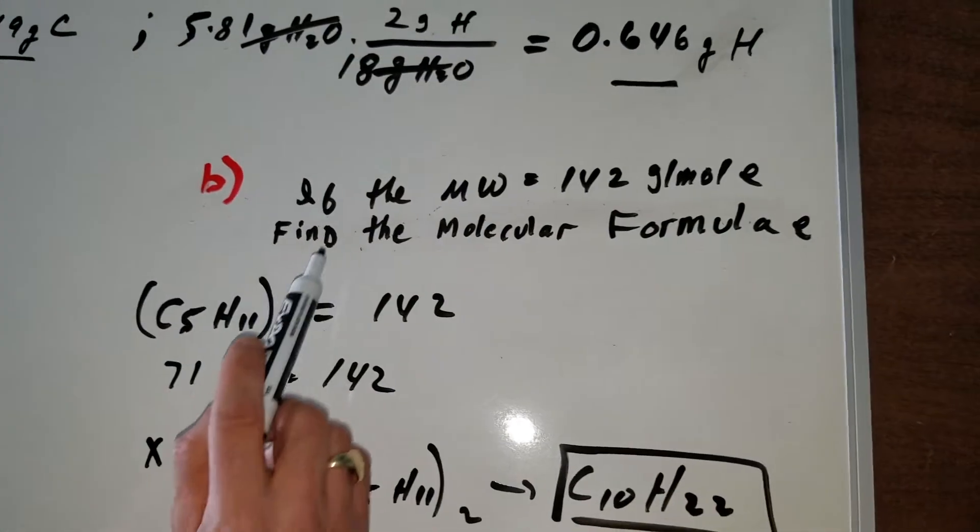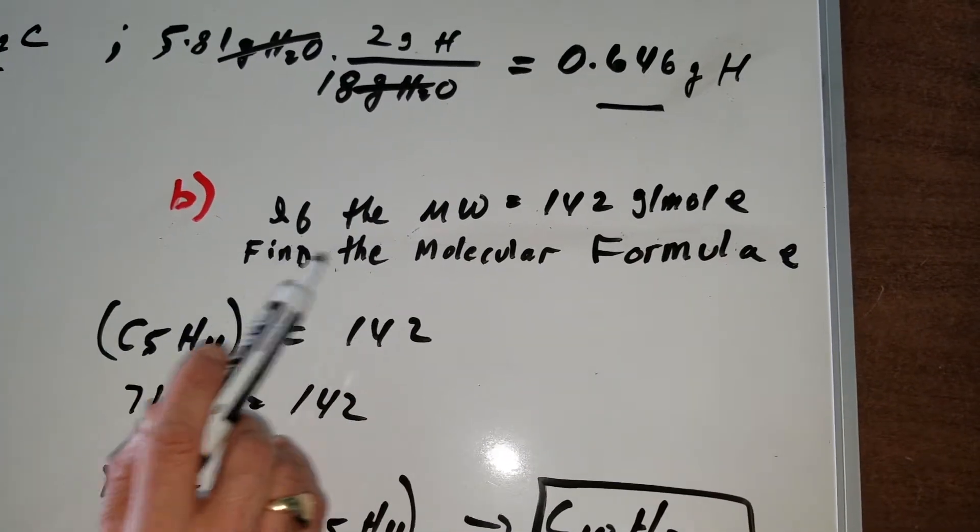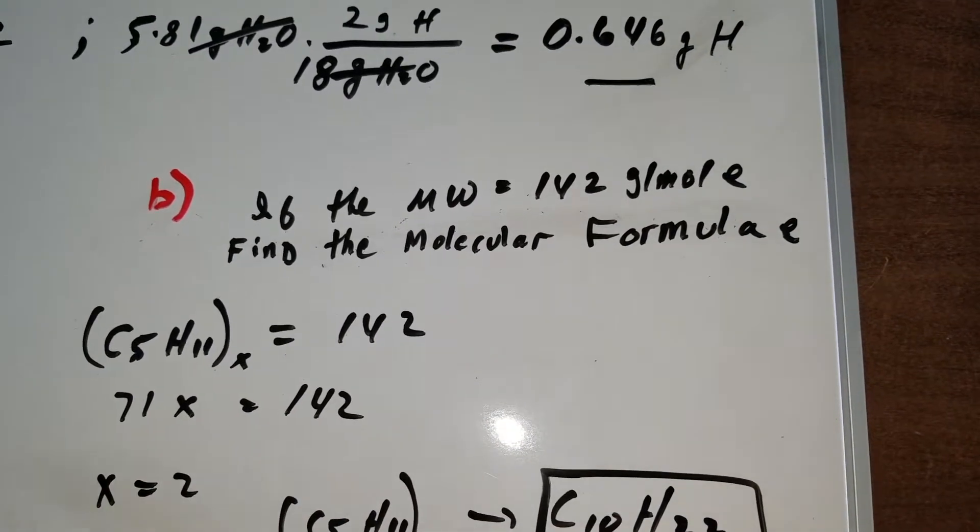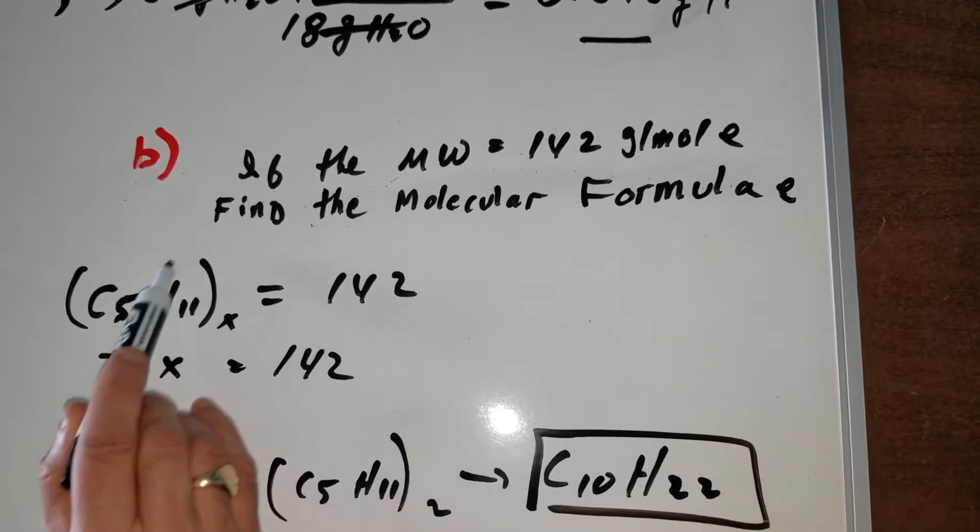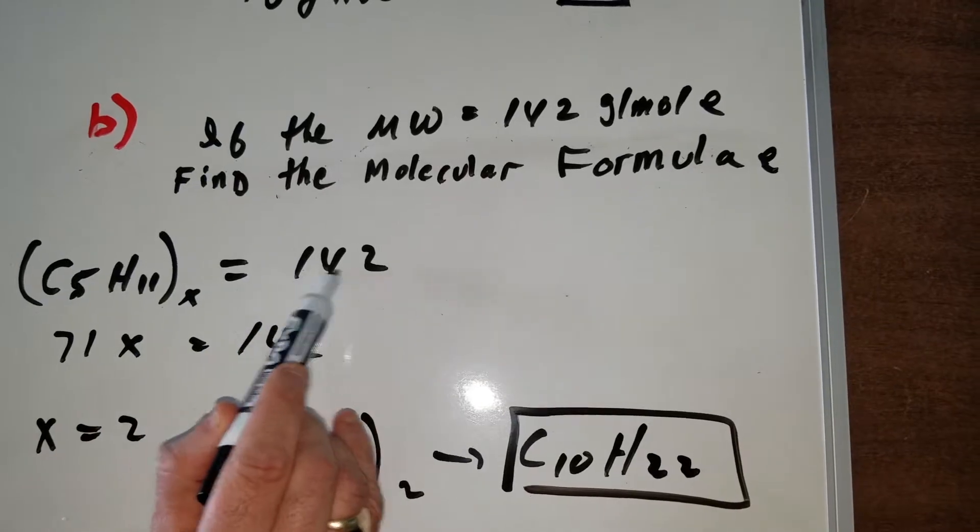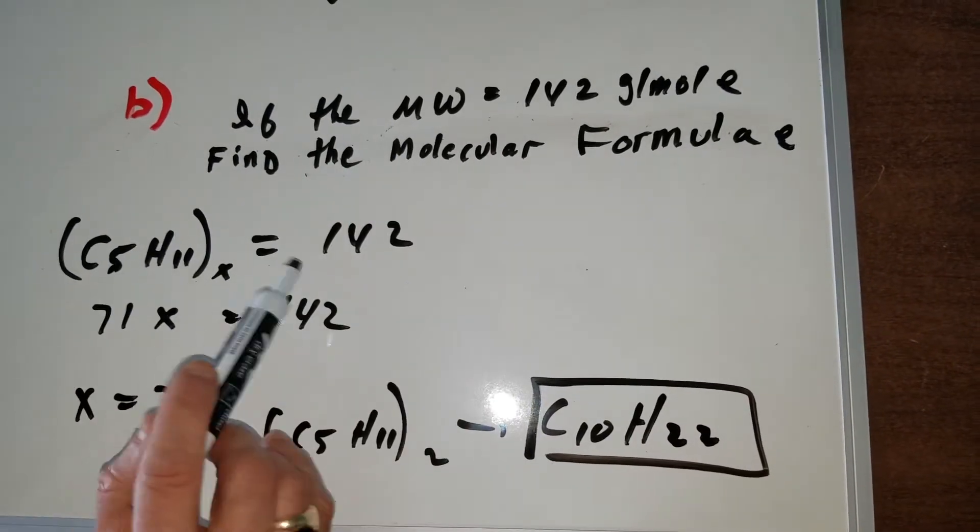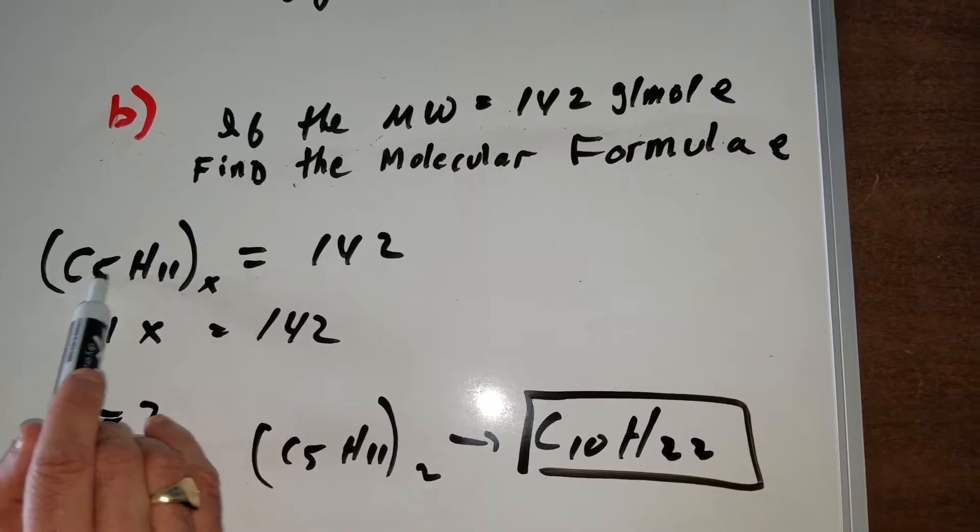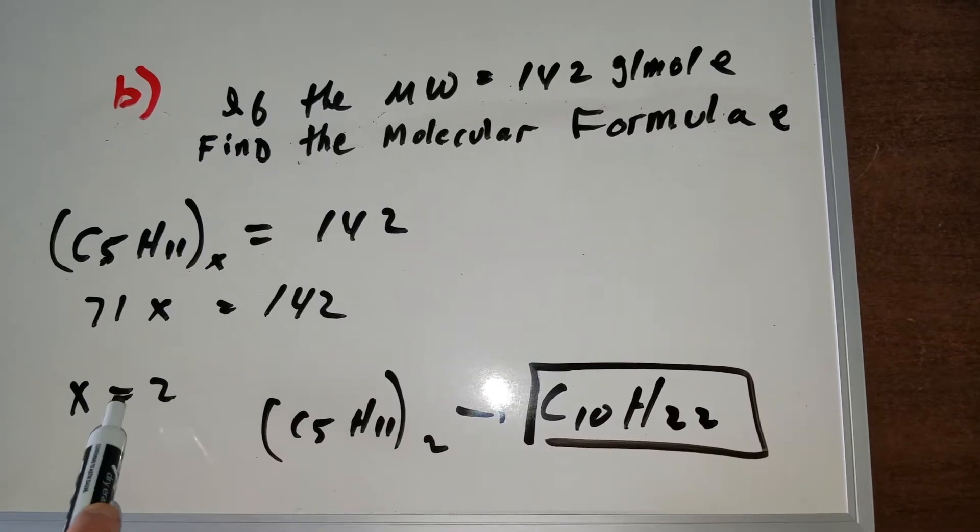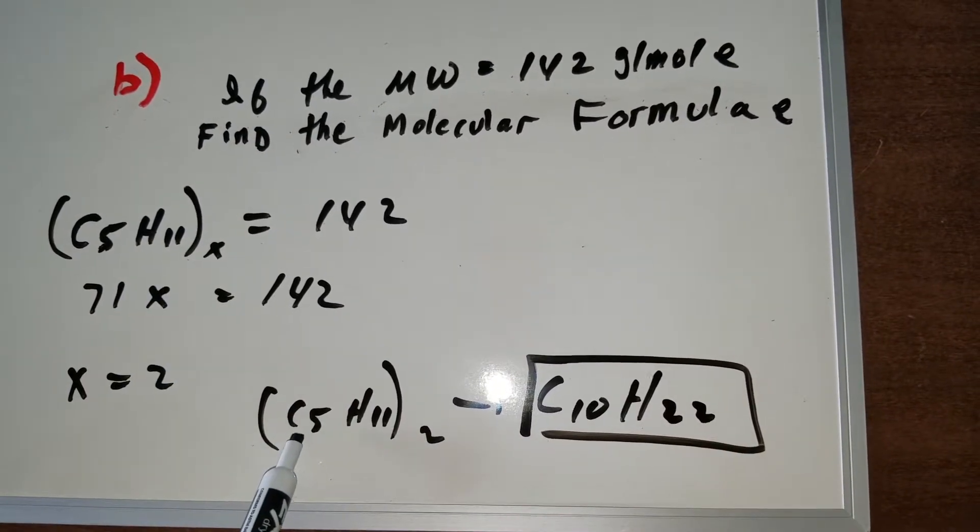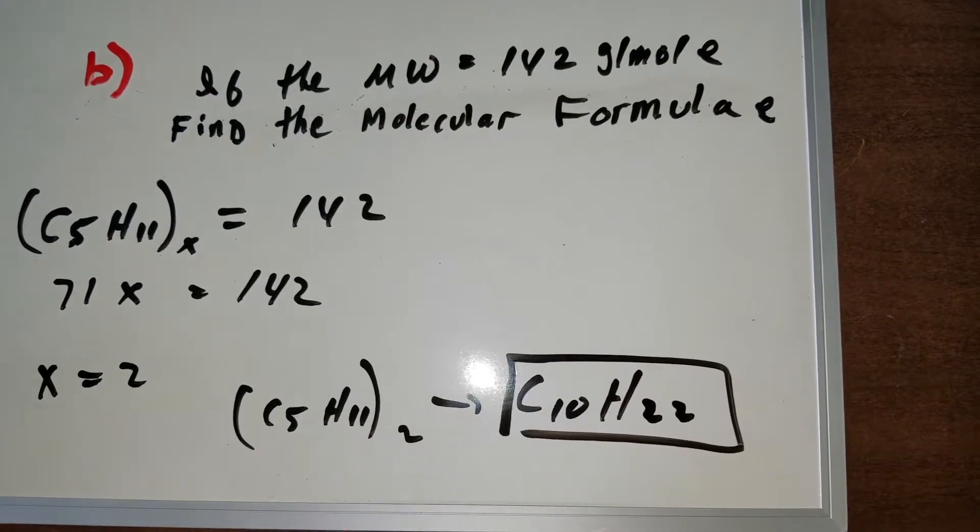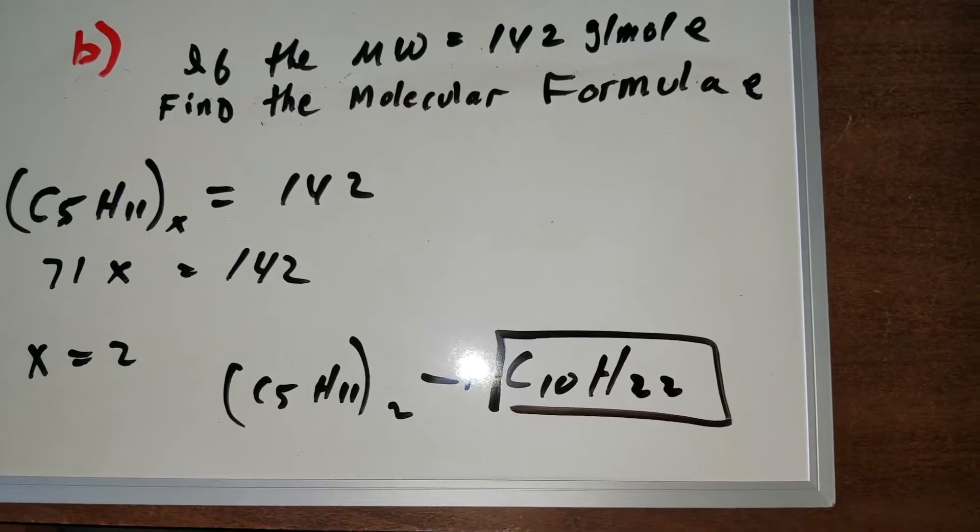Part B of this question says that if the molecular weight was 142 grams per mole, what would the molecular formula be? We found the empirical formula. So I take the empirical formula and put it in brackets with a little x and set it equal to the molecular weight. The weight inside gives me 71. So 71x is 142, x is 2. We get C5H11 taken twice and that gives me the alkane C10H22.